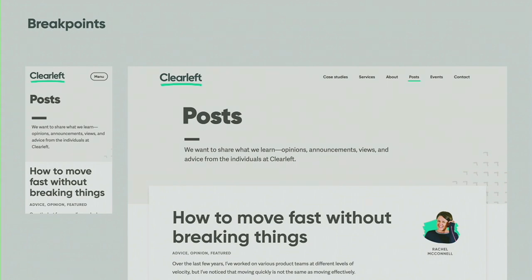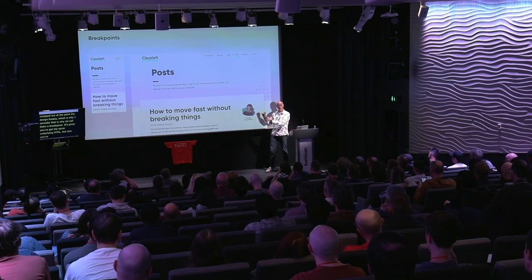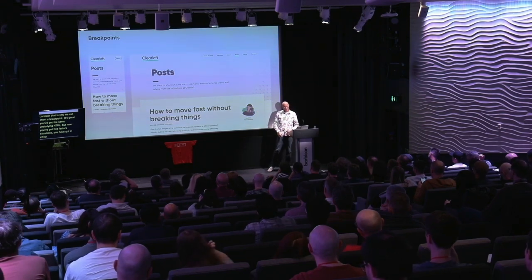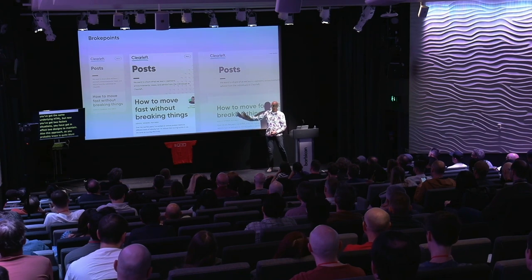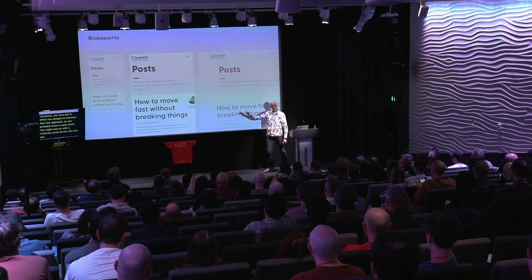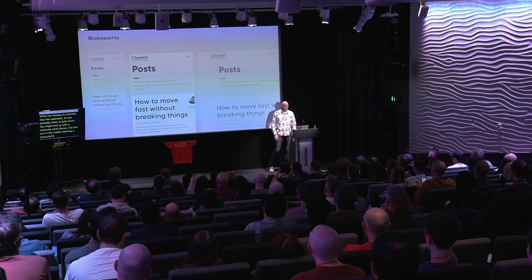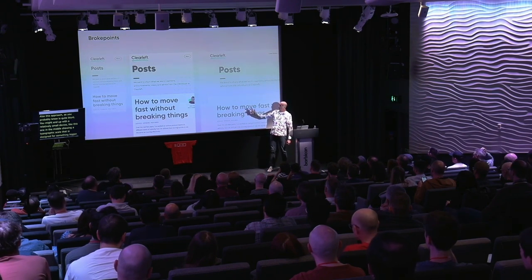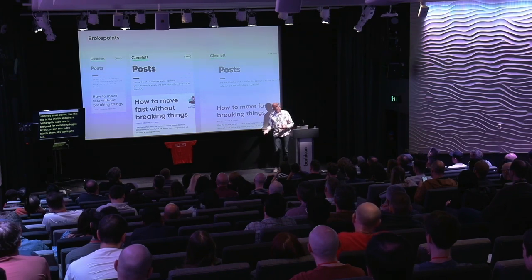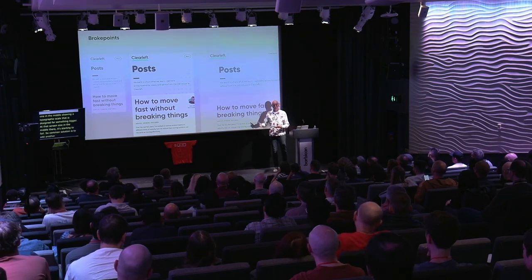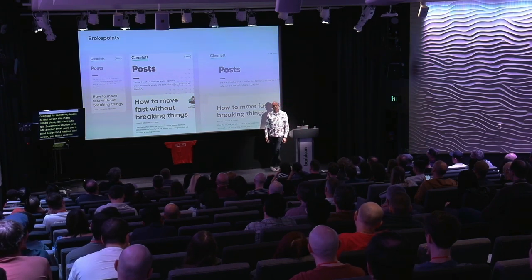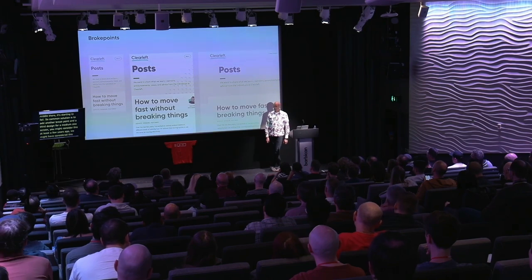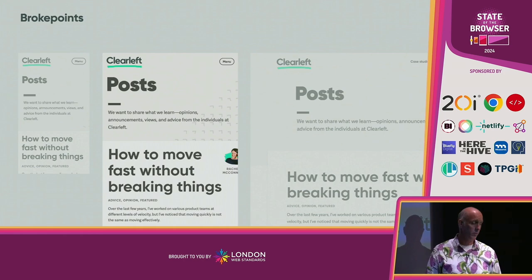This approach is quite blunt. You might end up with a relatively small device showing a typographic scale really designed for something bigger, and at that screen size it starts to fail. So a common solution is to add another breakpoint and a third design for a medium-sized screen. But this fractures the situation even further — now we have three designs to look after. And anyway, what scale should you use for that middle one? How big is a medium-sized screen, and how far away is it?